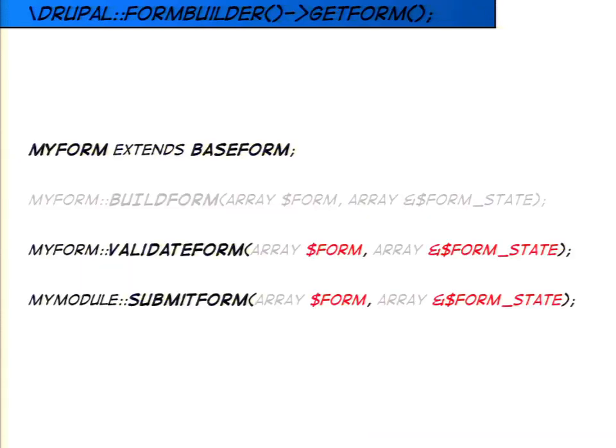So that's how a form gets built. When somebody views a URL like slash contact and Drupal knows there's a form there, it calls the form builder's get form method, which delegates to your class's build form method. That build form method returns one of these giant nested arrays that defines the structure of your form. Drupal turns it into HTML, sends it to the browser, and the browser renders it. Once somebody clicks submit, the form is sent back to Drupal, which this time calls the validate form method, followed by the submit form method if everything passes validation.